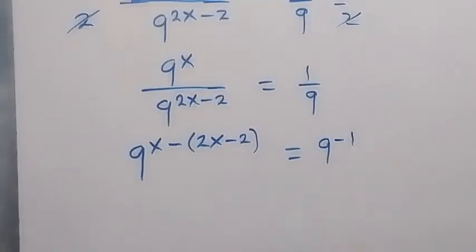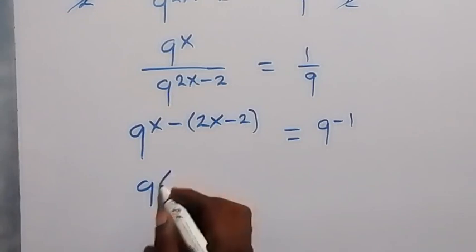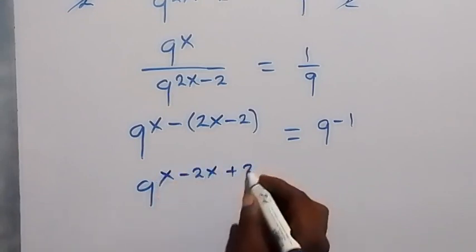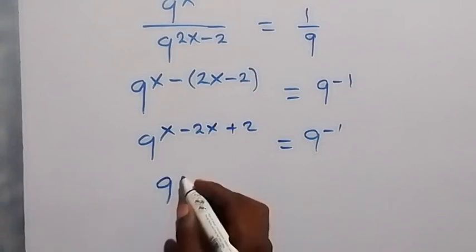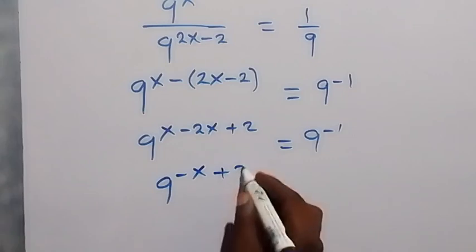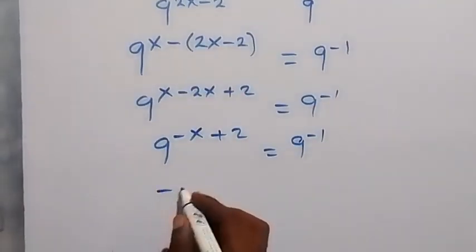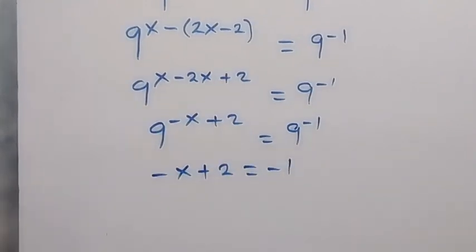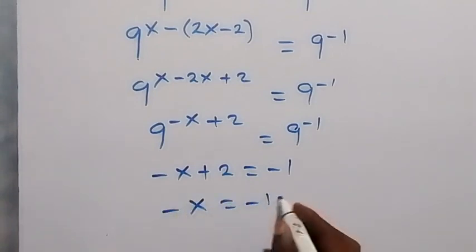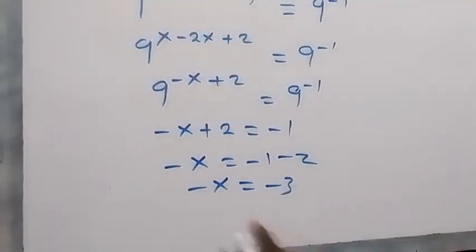From the law of indices, a negative power is the same as a reciprocal. Simplifying the exponent: x minus 2x plus 2 gives minus x plus 2. Since the bases are the same we equate the powers: minus x plus 2 equals minus 1, so minus x equals minus 3, and therefore x equals 3.